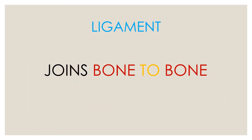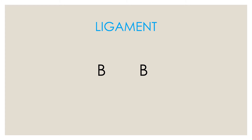So what is a ligament? A ligament joins a bone to a bone. Both the B's on the screen stand for bone, and they are connected with the help of a ligament. Bone joined to bone with the help of a ligament.